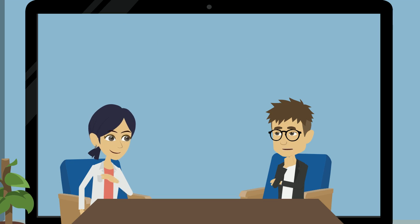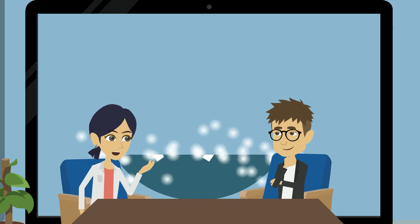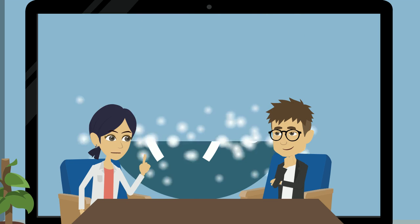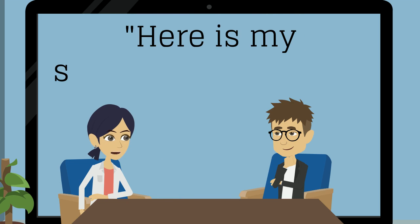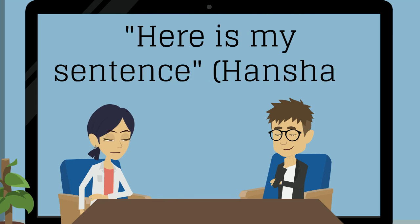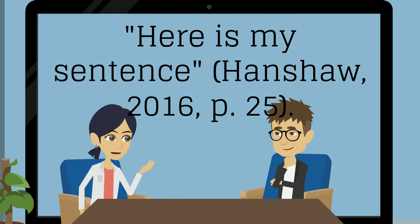I think I'm getting it. Is there anything else I need to know? Another important element of a citation is the parentheses. These are found at the end of a sentence and give details about the original source of the ideas you are indicating in the sentence. These parentheses are where you will put the citation.